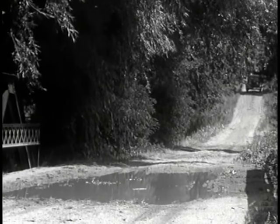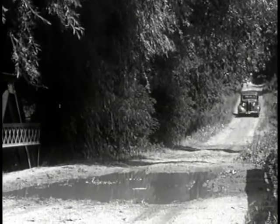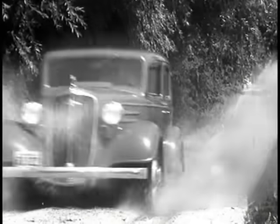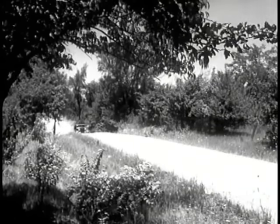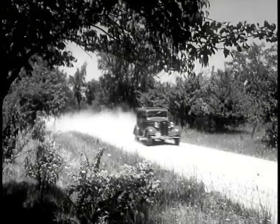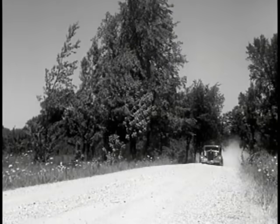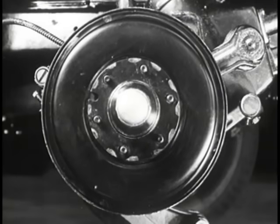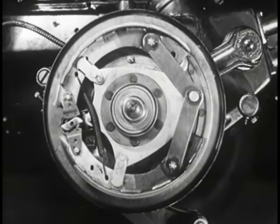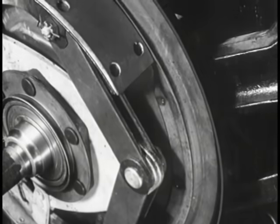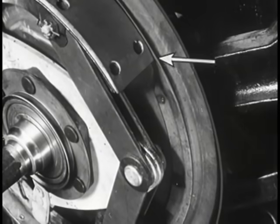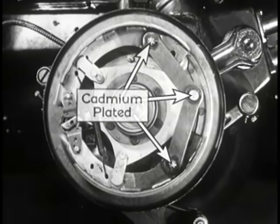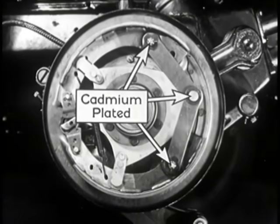Regardless of how well a brake is designed, its moving parts must be protected from water, slush, mud, dirt, sand, dust, and grit. If they aren't, they can't stand up. This is why Chevrolet protects the interior of its brakes with this close-fitting shield and, in addition, protects the bearing parts against rust by plating them with cadmium.